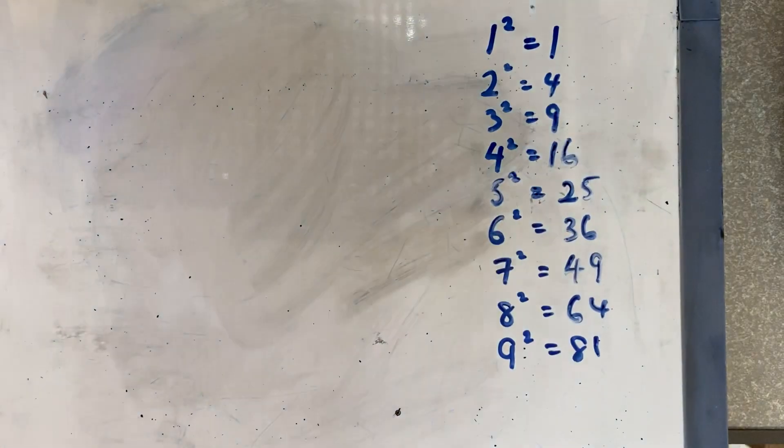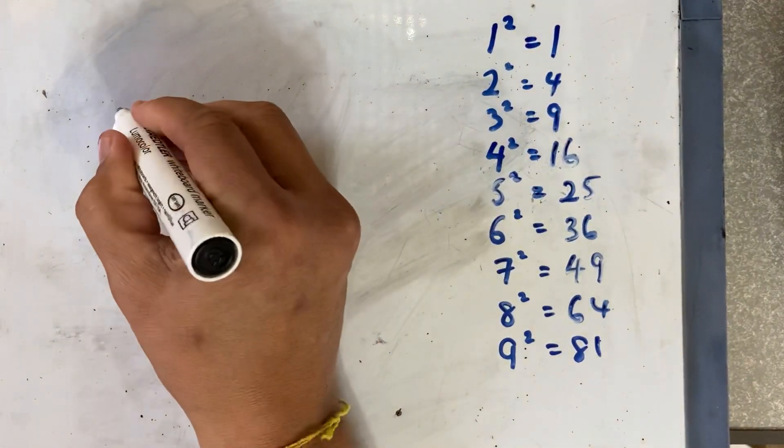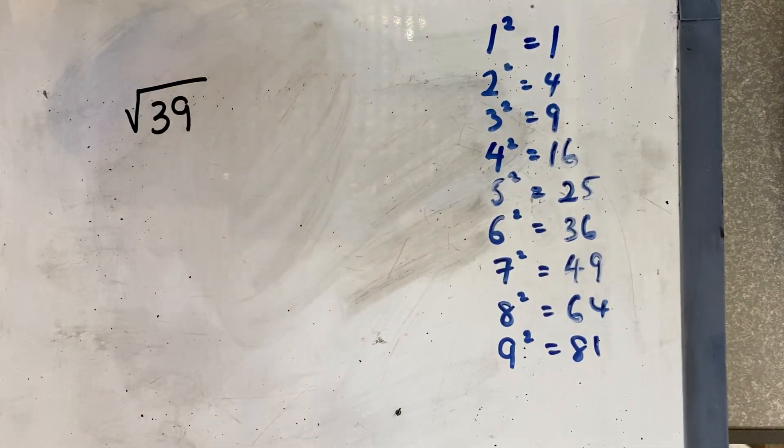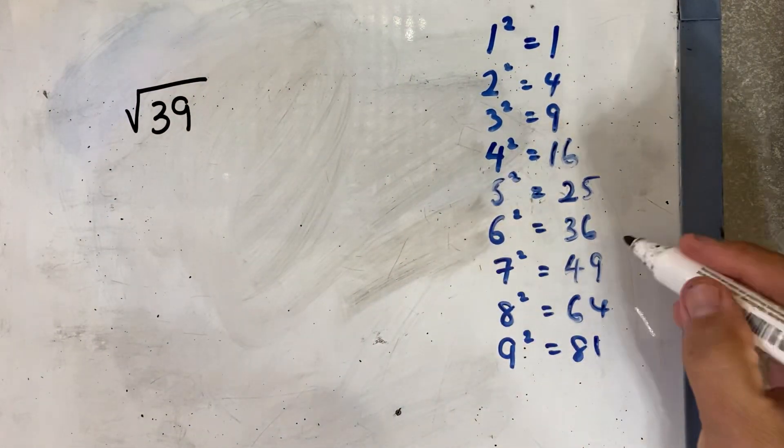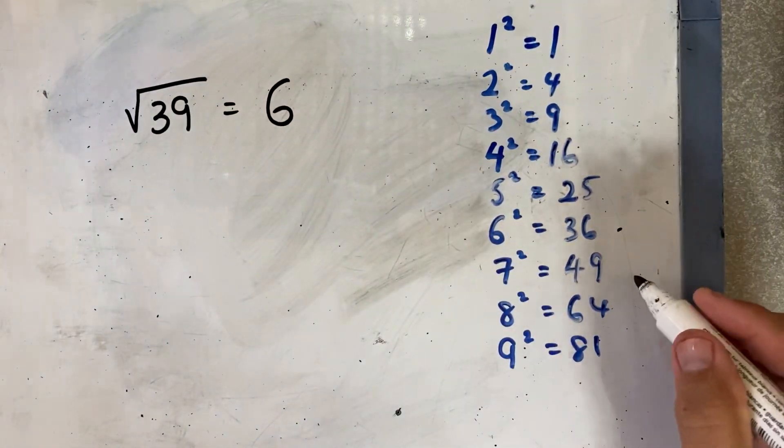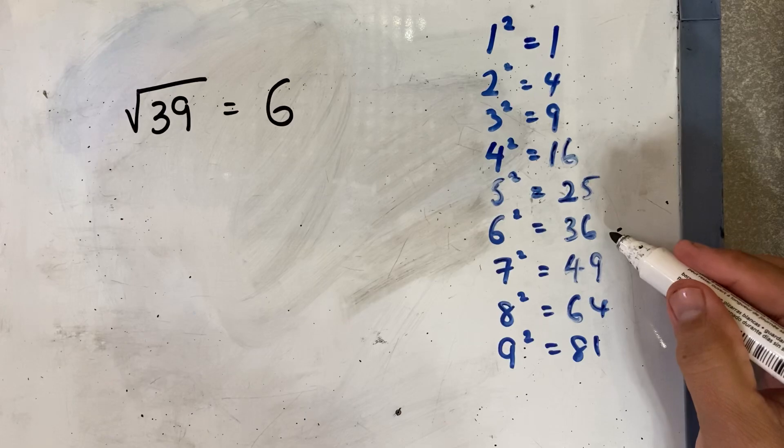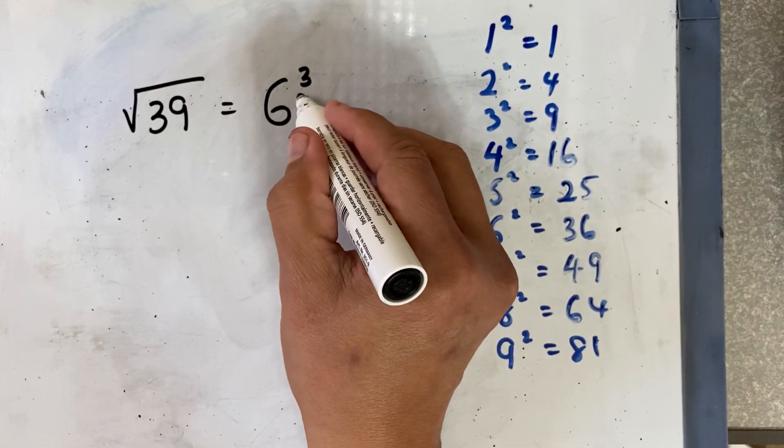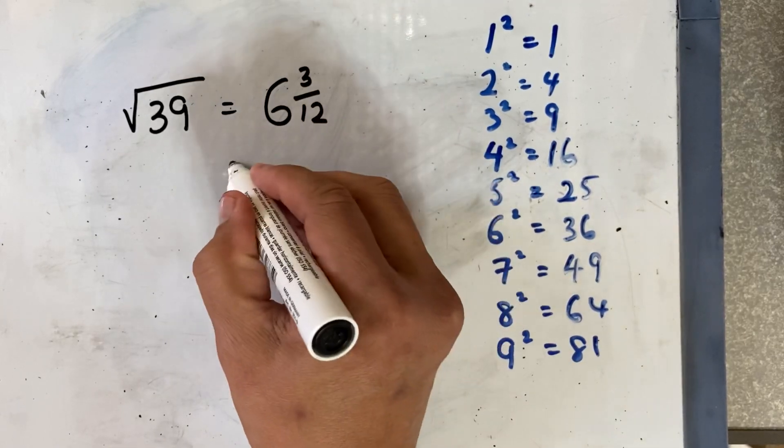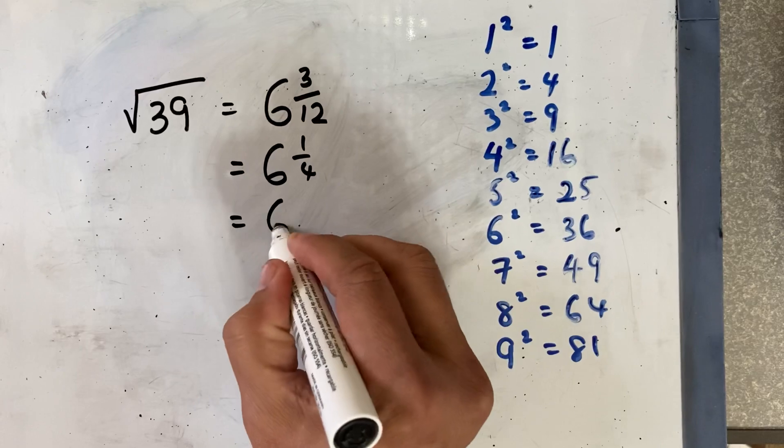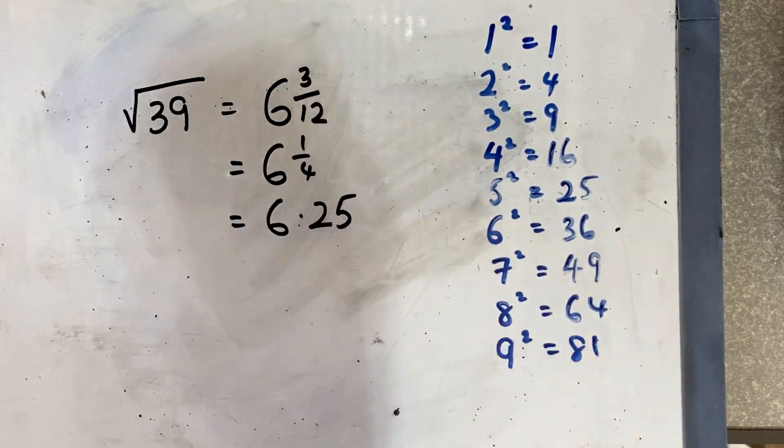And the last one is going to be square root of 39. I'll give you a few seconds to think about it. So the closest is going to be 6. 6 times 6 is 36, remainder 3, and then you double the 6, which is 12. It's going to be 6 and 3/12, which is 6 and a quarter, and the answer is 6.25.